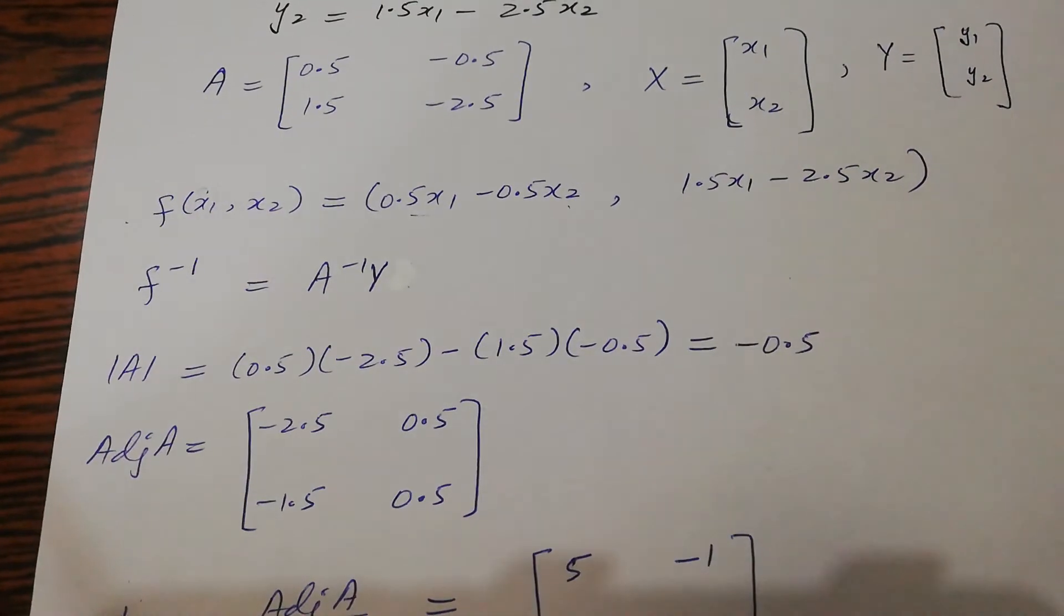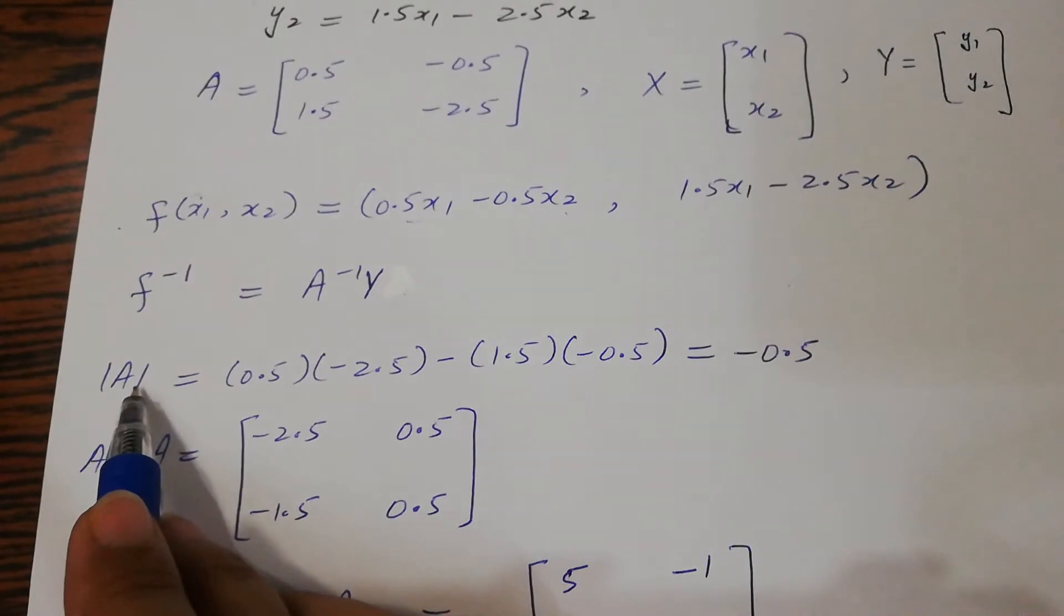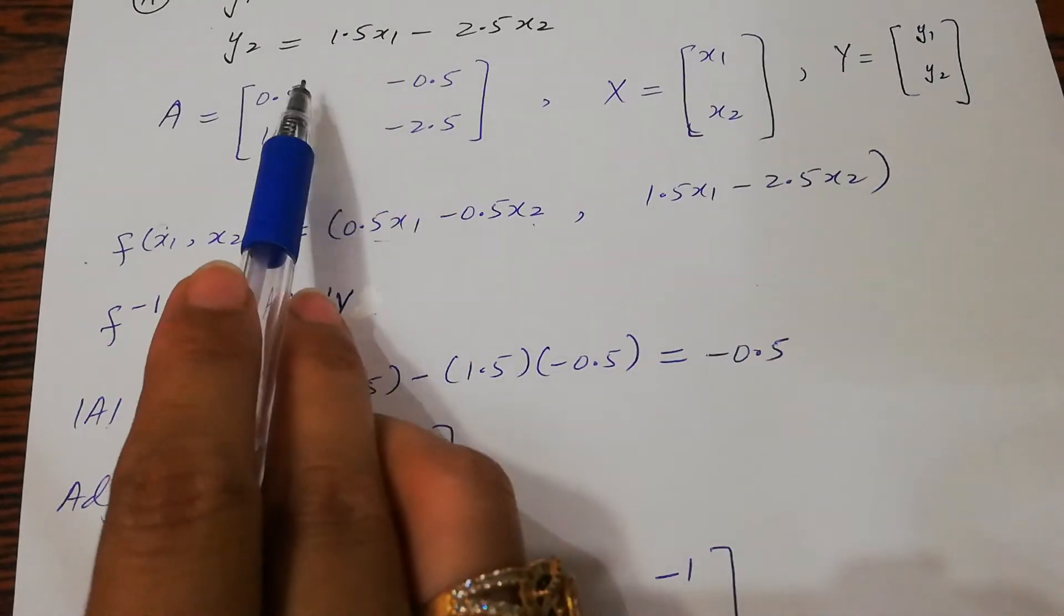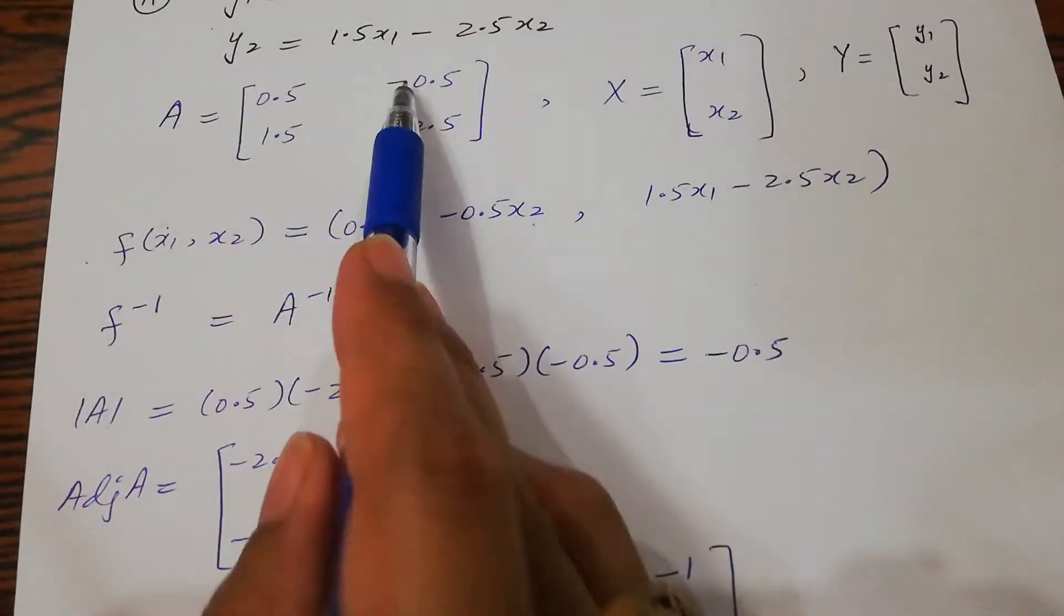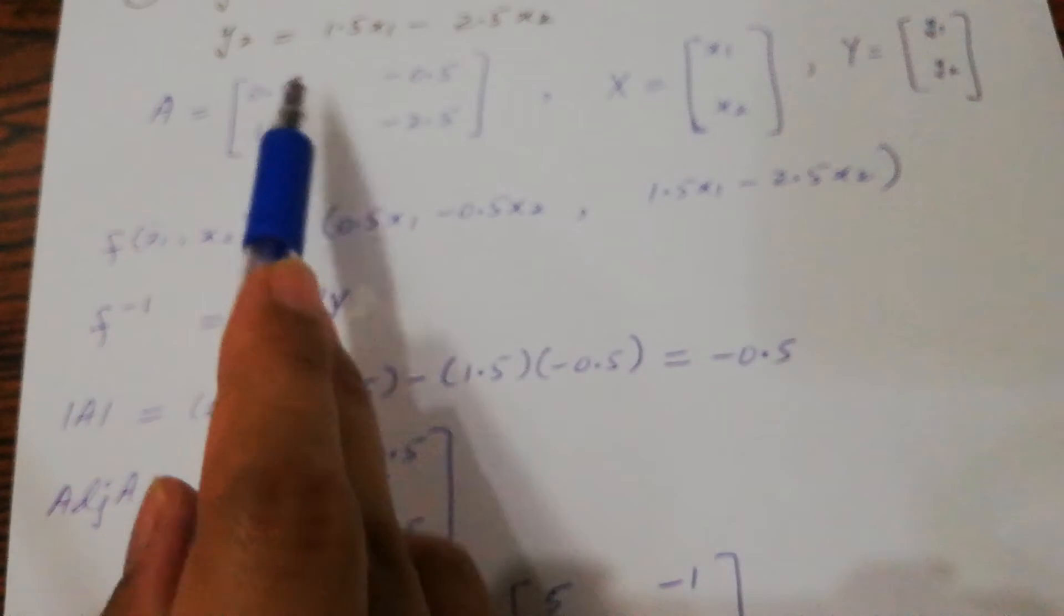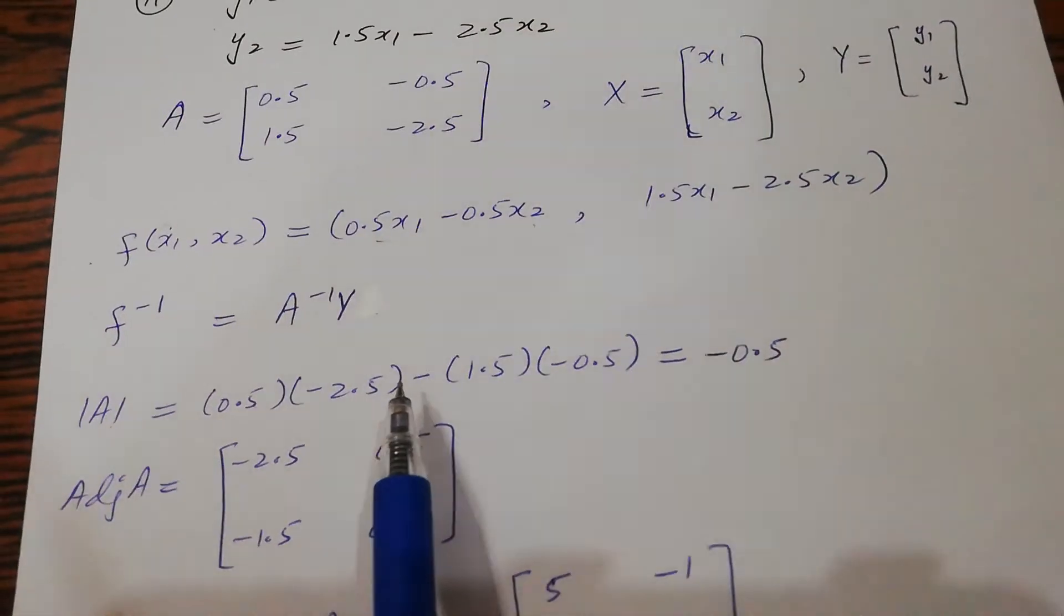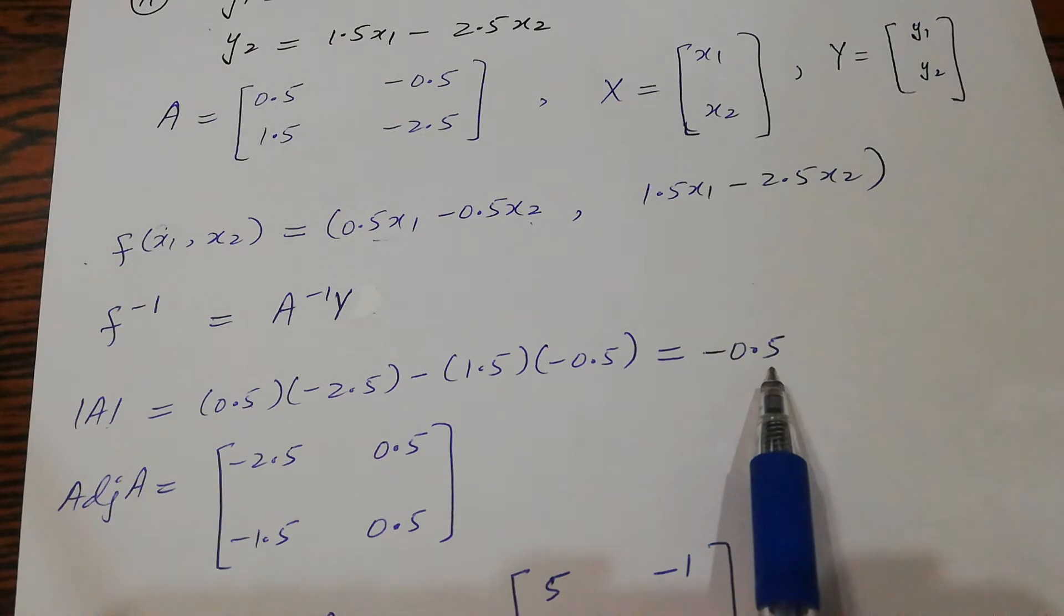You know how to find the inverse of a 2x2 matrix. First find its determinant. Multiply the elements of the main diagonal minus the secondary diagonal: 0.5 times -2.5, minus 1.5 times -0.5. You get -0.5.